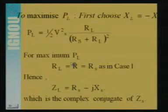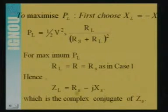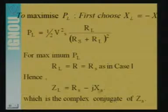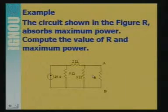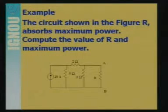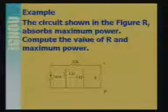So ZL equals the conjugate of Zs. That means ZL equals RL plus jXL, where RL equals Rs and XL equals minus Xs. In the AC circuit case, power transfer to the load will be maximum when the load impedance is the complex conjugate of the internal impedance of the network. Complex conjugate of A plus jB is A minus jB.